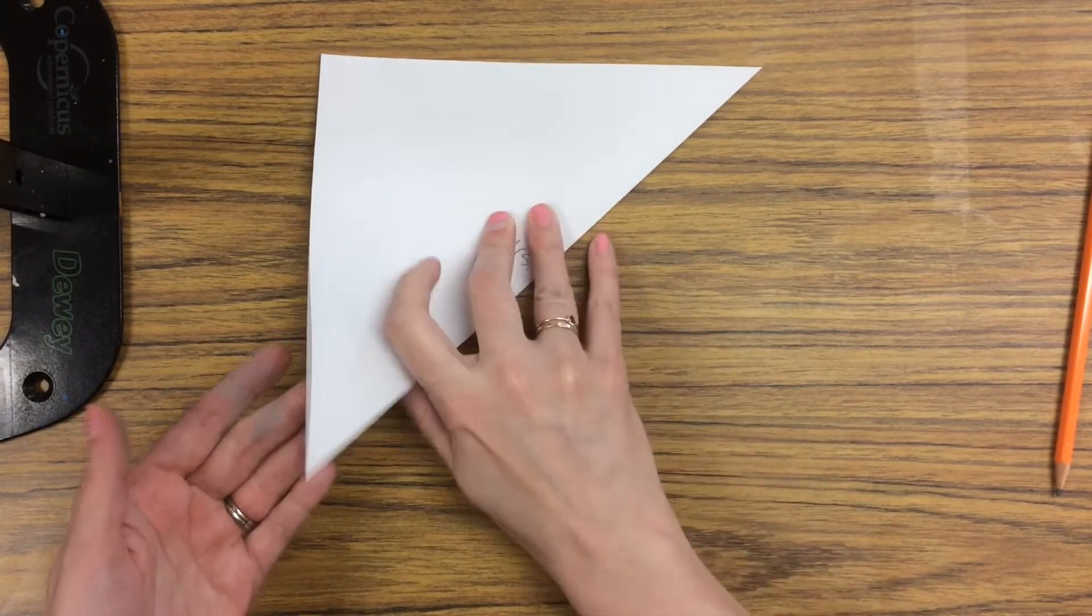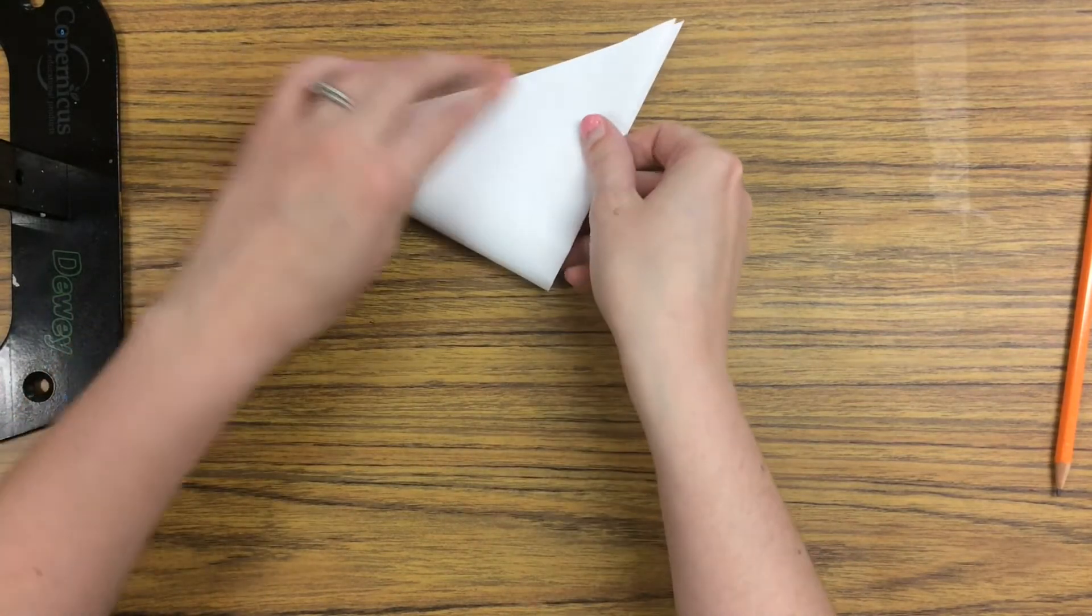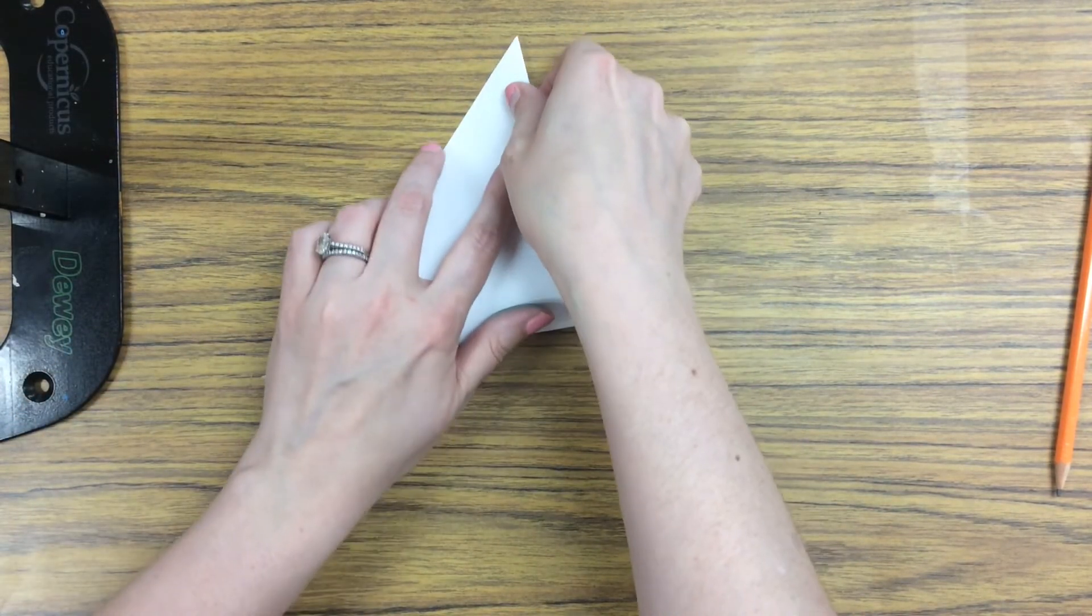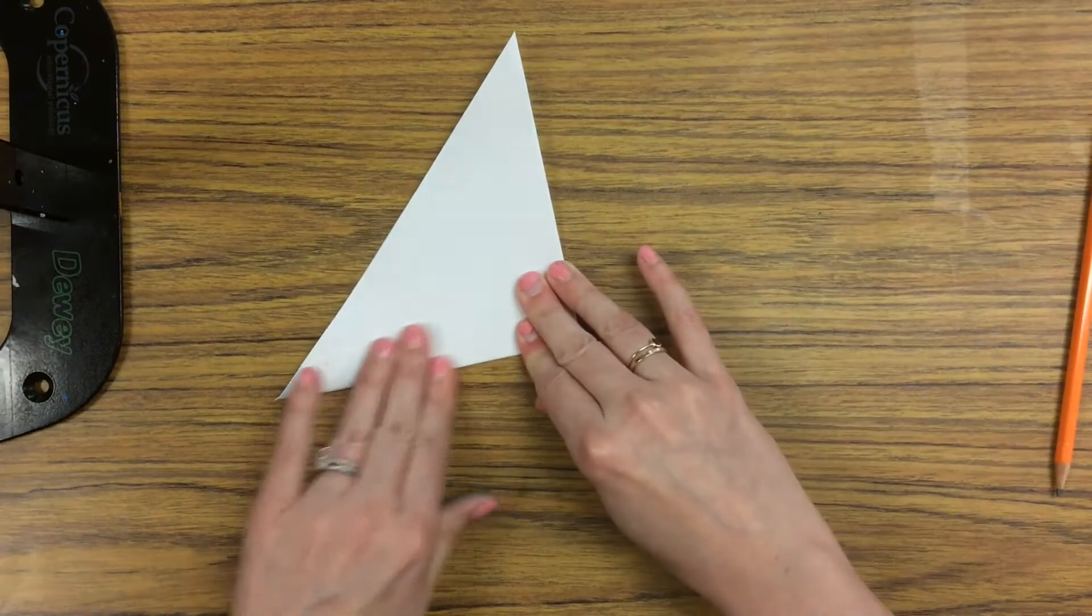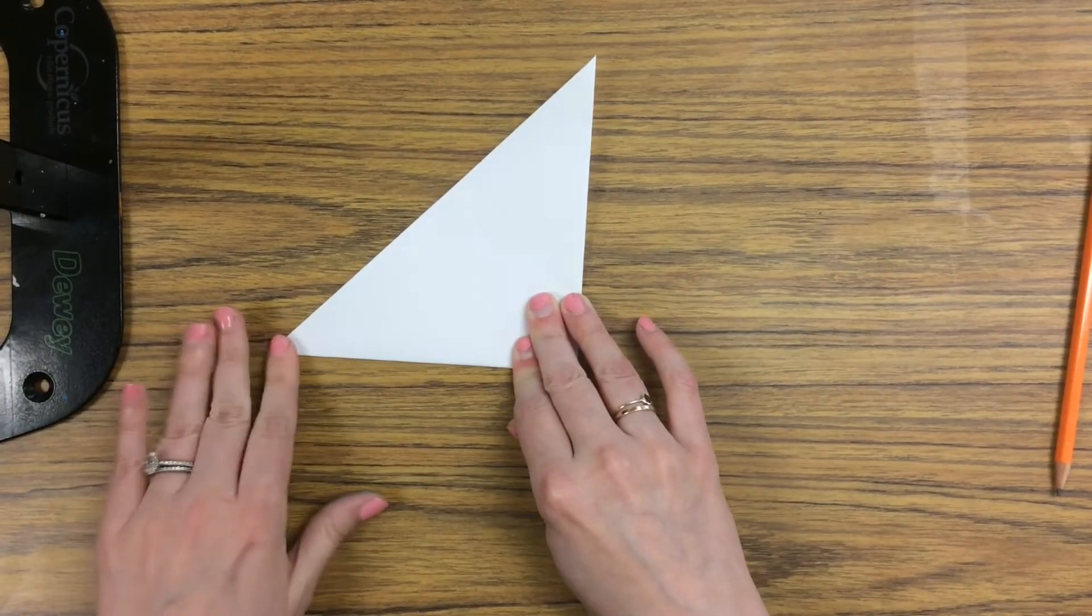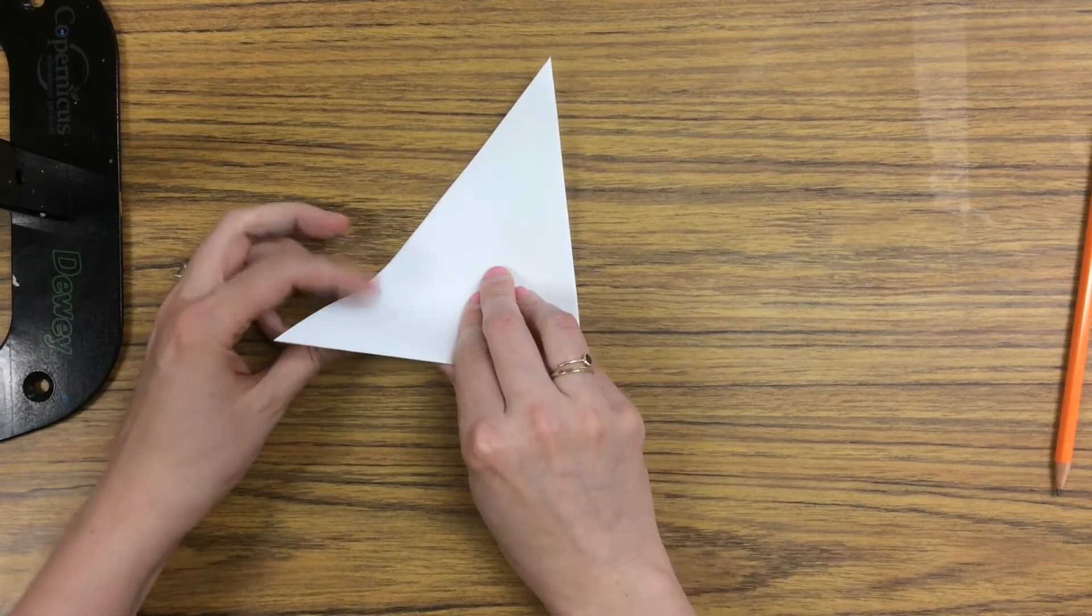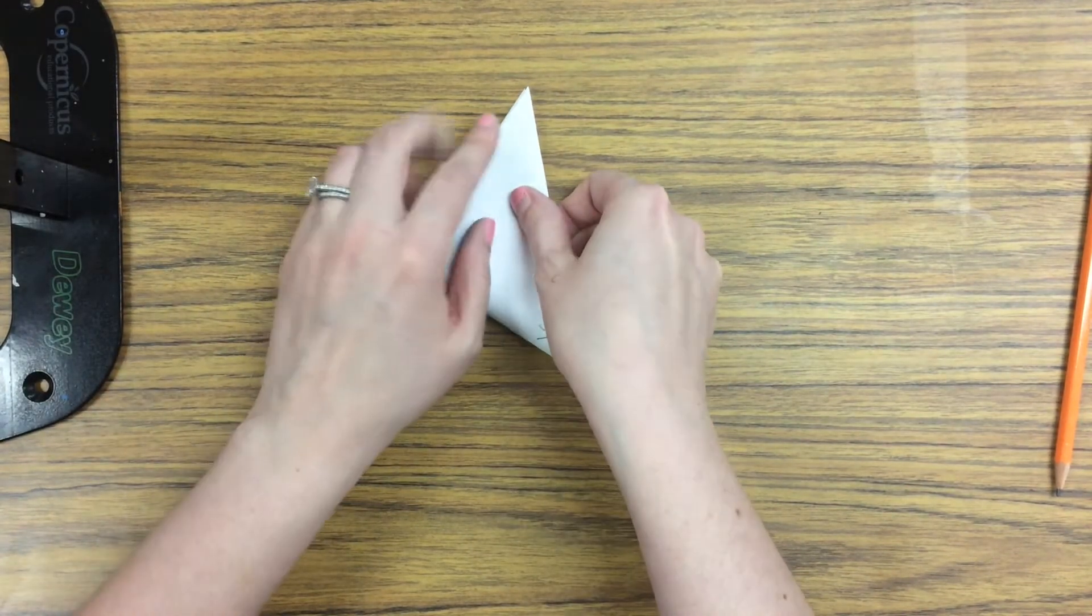Next, we are going to take the bottom corner and fold it into a smaller triangle, again lining up the corners and carefully pressing the crease. Now we are going to do this one final time, creating a smaller triangle.